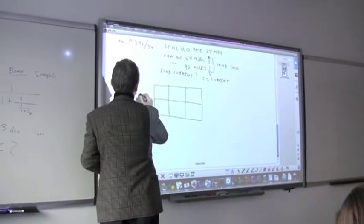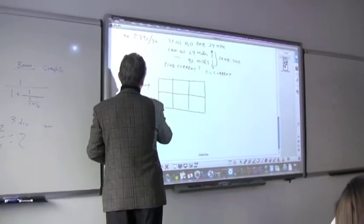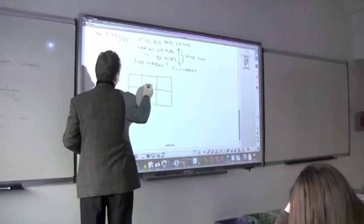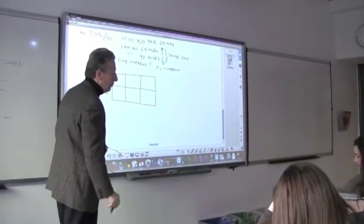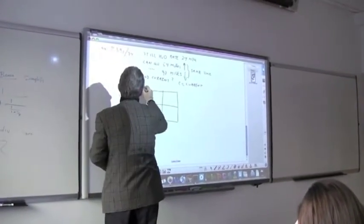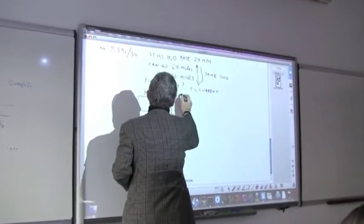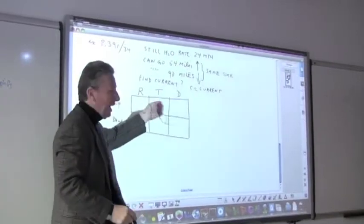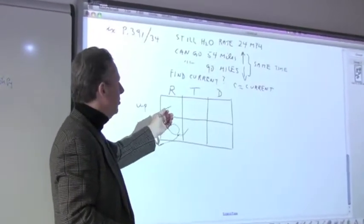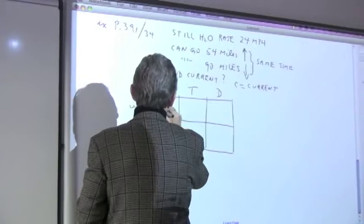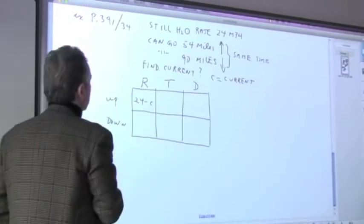All right. So, let's say we divide this up. Yeah, people like to do this. I usually don't, but that's just because I'm a pompous guy. You know, there's nothing wrong with doing that. And how would you label these two rows? What's convenient? Up and down. Very good, right? And in these three columns, what could be in there? The first one would be for rate. So, it would be 24 minus C.